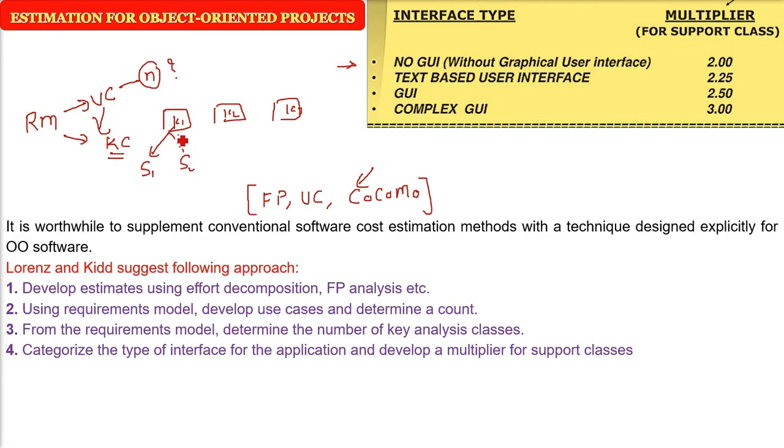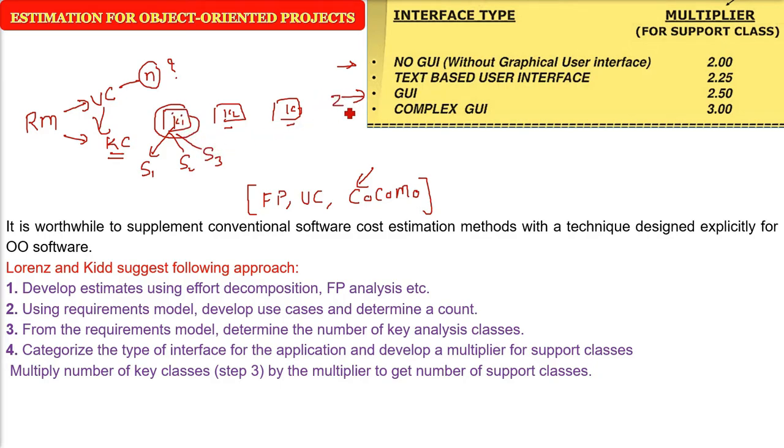Each analysis class will have support classes. To get the support classes, multiply the number of key classes in each category (from no GUI to complex GUI) by a multiplier. For example, if you have GUI-based analysis classes, multiply that number by 2.50. If you have two key GUI classes, multiply by 2.5 to get five support classes. The same applies to other categories - multiply by the multiplier given in the table to get the support classes.